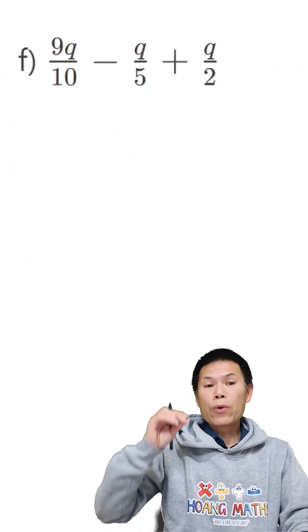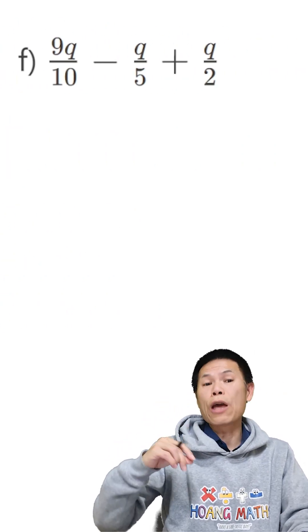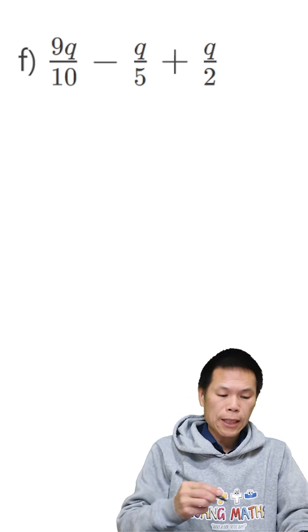Now part f. We have denominators 10, 5, and 2. Therefore the lowest common denominator is 10.